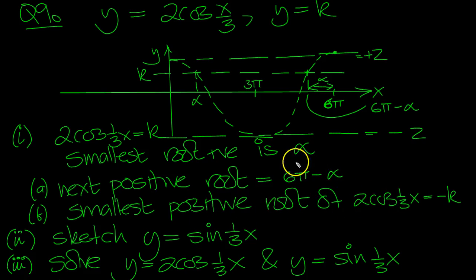Smallest positive root when that equals minus k. So let's draw it in then. Here's the 3π line. So if that's alpha, this would be alpha as well. This is the value of minus k. So here's the actual root when it's equal to minus k. That would be 3π minus alpha. And I'll put the answers here in the notes because it's a long question.